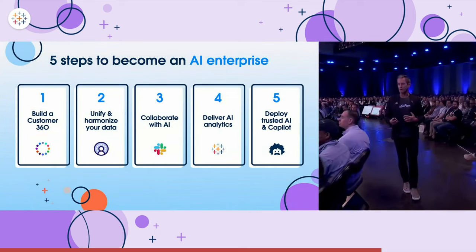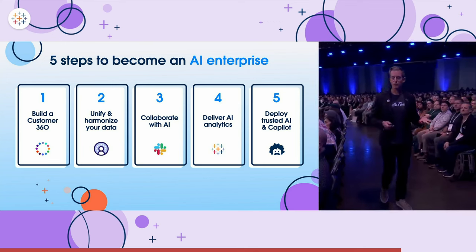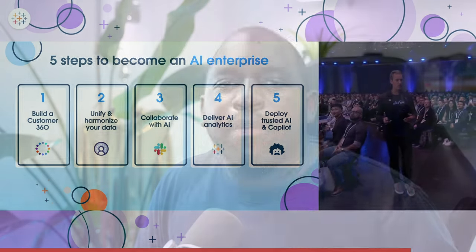When companies switch the metrics they focus on, it's often because the incumbent metric is no longer favorable — so you have to ask what the unfavorable metric is here. The placement of Salesforce's values was really prominent throughout, and Ryan outlined the five steps of becoming an AI enterprise, clearly placing Tableau in the fourth spot, right before Einstein and Copilot.